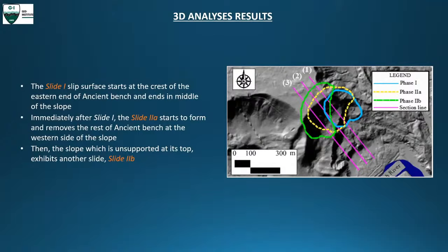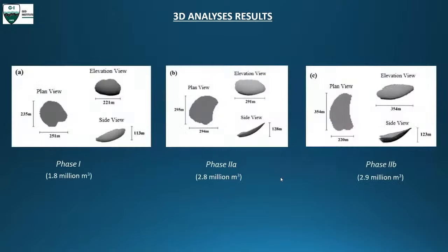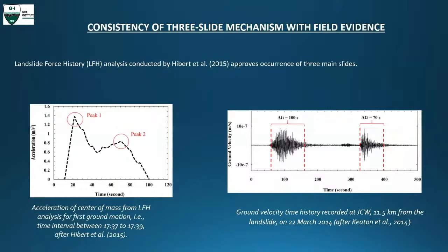Particle swarm optimization was used to find the critical failure surface, with Spencer's method for stability analysis to compute probable failure surfaces, using Mohr-Coulomb failure criteria. Fully softened shear strength parameters from proportional ring shear tests were implemented to model the advanced glaciolacustrine clay deposit. The model shows the extent of modeling along three cross-section lines, highlighting how the ancient bench reduces when moving from the western to eastern side — cross sections three, two, and one — with the ancient bench geometry somewhat rotated and implemented accordingly in the model.